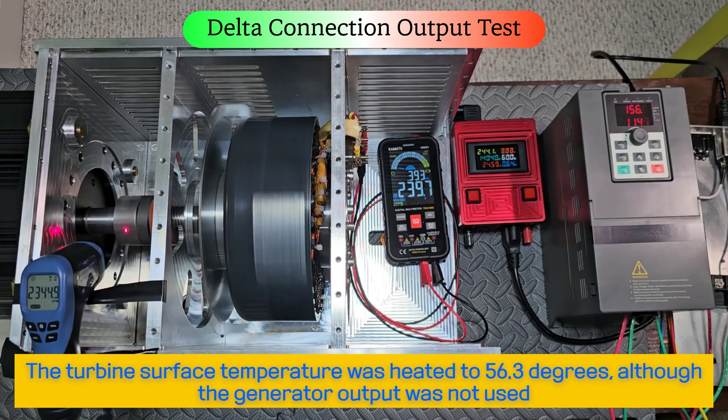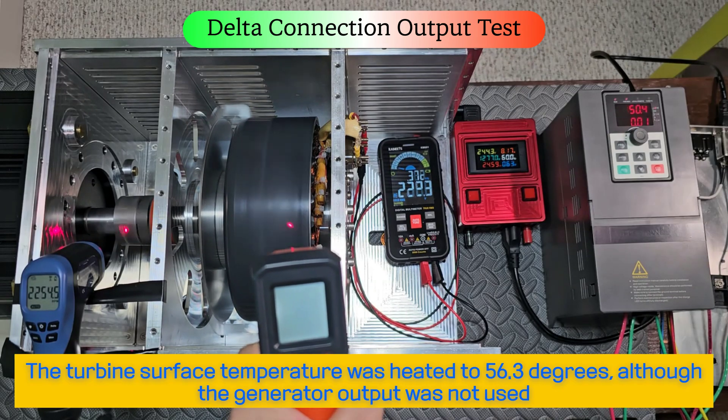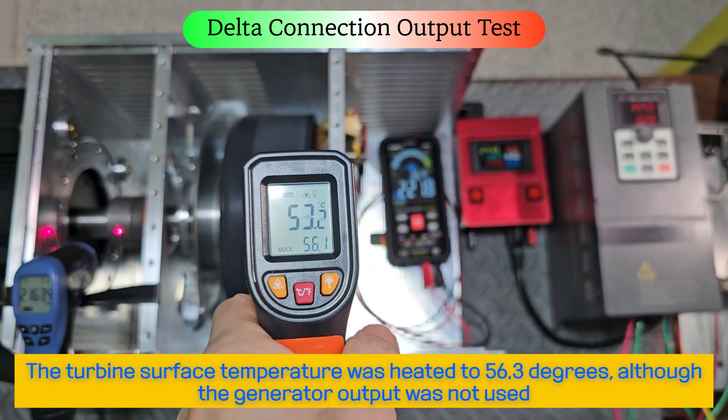The turbine surface temperature was heated to 56.3 degrees, although the generator output was not used.